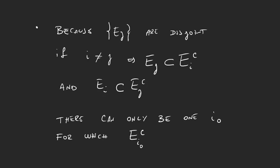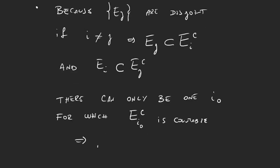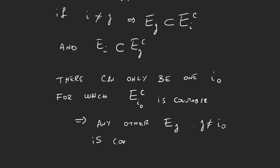So what this is telling us is that there can only be one index for which the complement of E sub i0 is countable, because if there was another one, then it would be included, and then it would have to be non-countable, and that's an absurd. So there can only be one element in our sequence with countable complement. And then what this is telling us is that any other E sub j for j different from this i0 we found is countable.